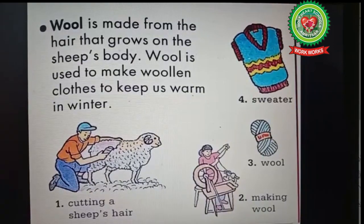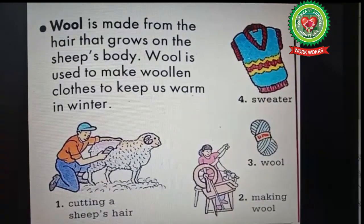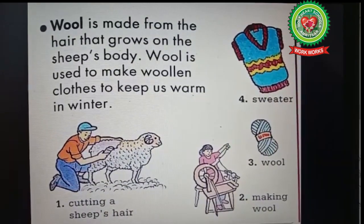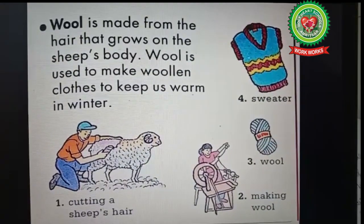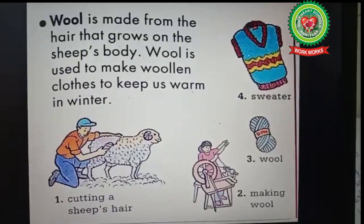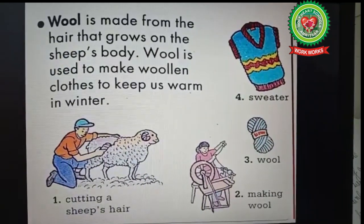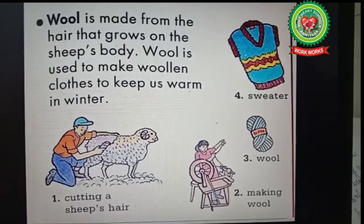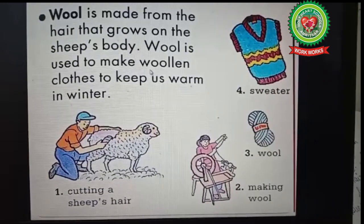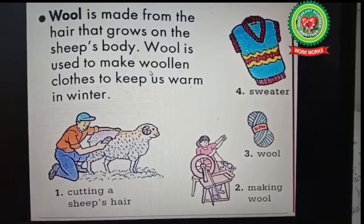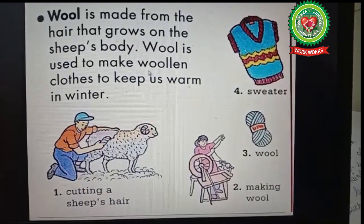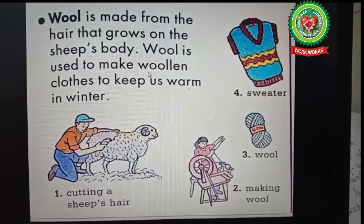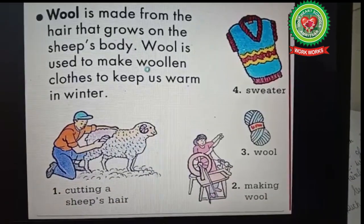Wool is made from hair that grows on a sheep's body. Mainly we get wool from sheep, but there are other animals such as mountain goat and camel which also give us wool. Woolen clothes keep us warm in winters. People use wool for making blankets, sweaters, bags, and so on.